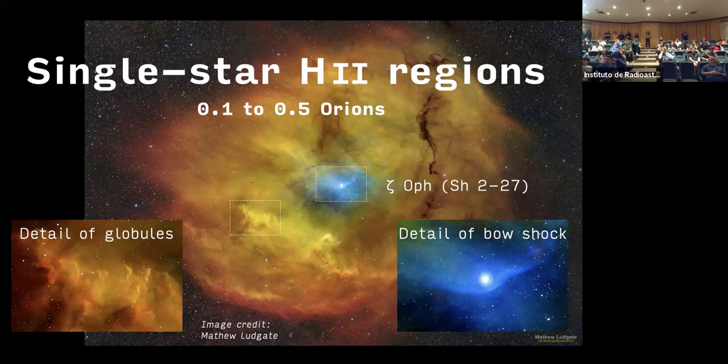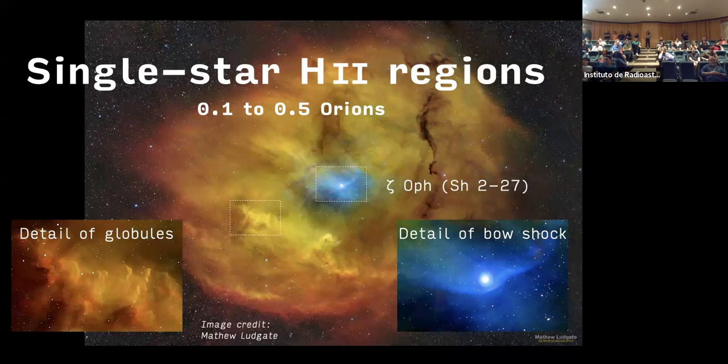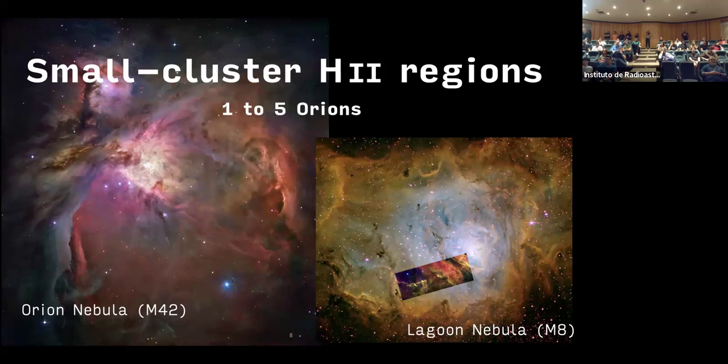Moving on to the luminosity, we get to small cluster H2 regions, which are often still dominated by one or two stars. These are more luminous regions, which examples are the Orion Nebula and the Lagoon.